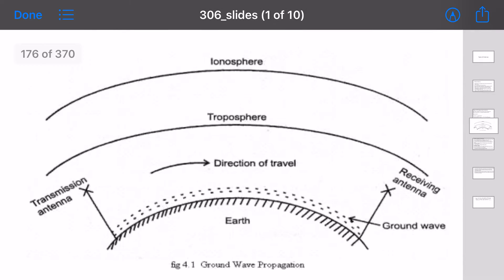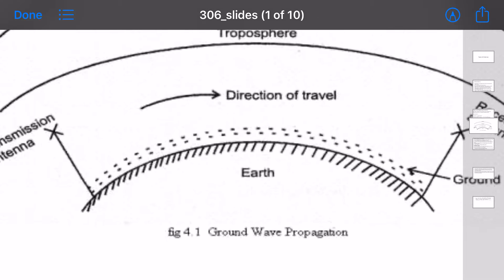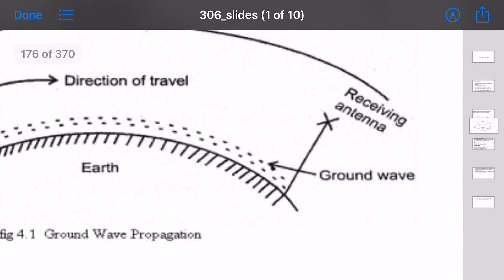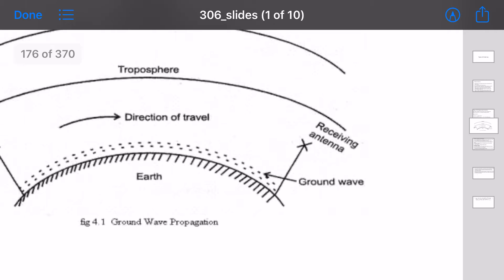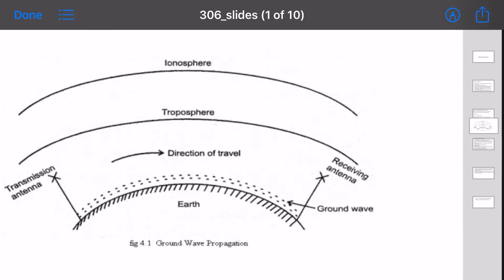How is ground wave propagation possible? It operates in the low frequency range, up to medium frequency (MF). A condition is that the transmitting and receiving antennas are smaller in size compared to other modes of propagation, and the transmitting antenna should be near to the earth's surface.